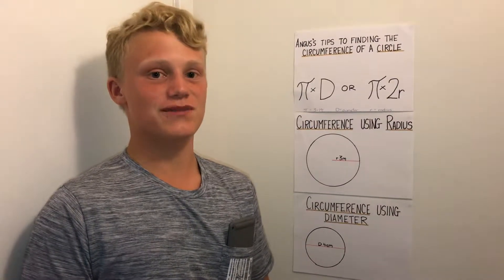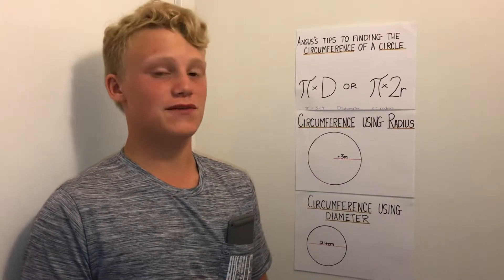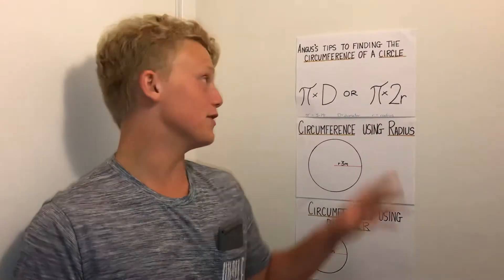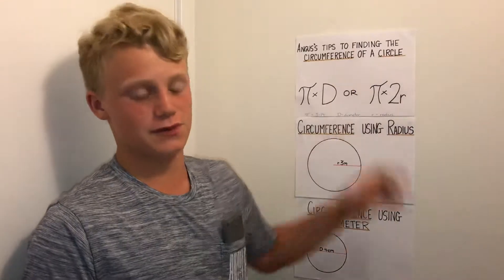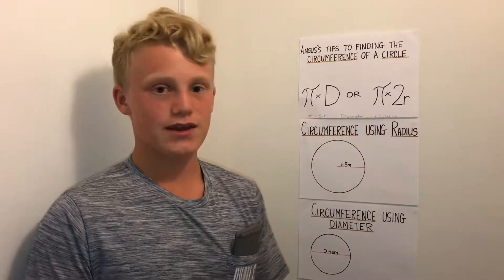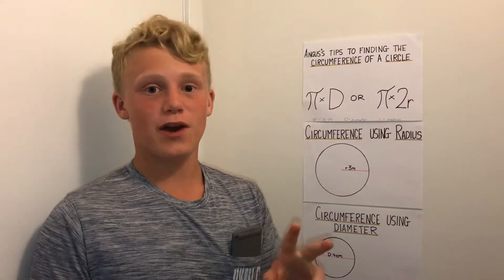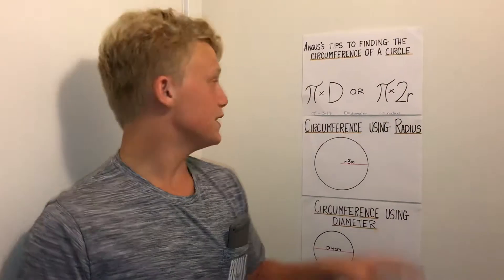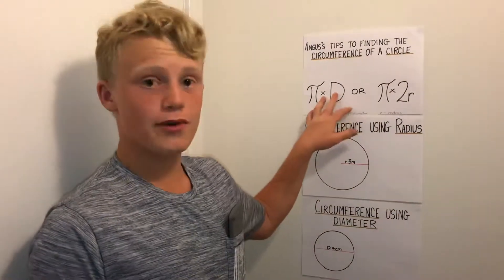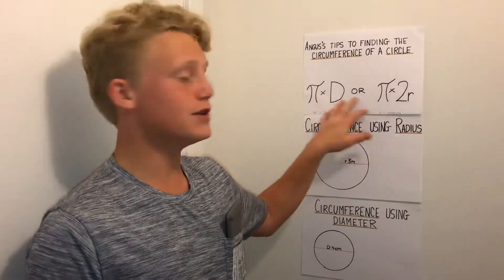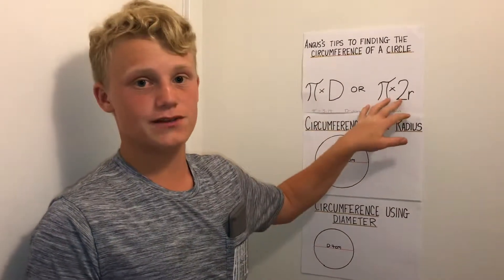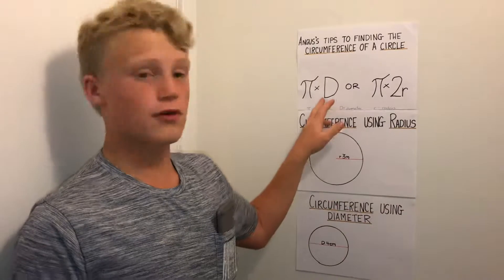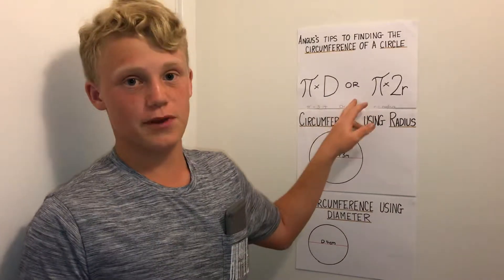Hi there, my name is Angus Cheatham and today I'm going to give you some easy tips on how to work out the circumference of a circle. There are two main ways to do this: one is using diameter and the other is using radius, and today I'm going to talk you through how to use both of them.